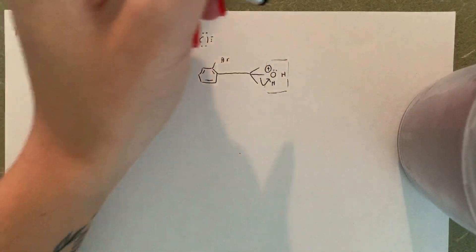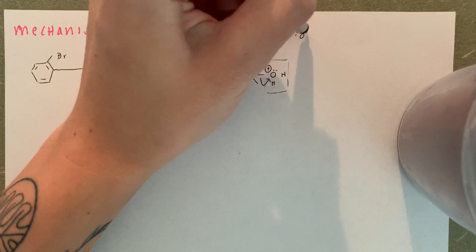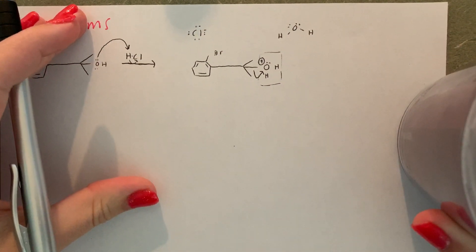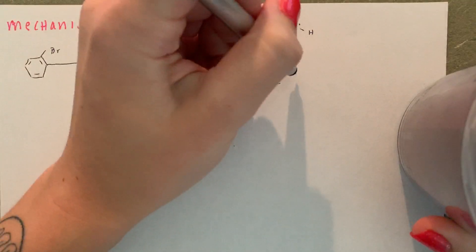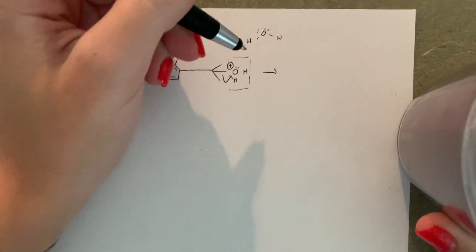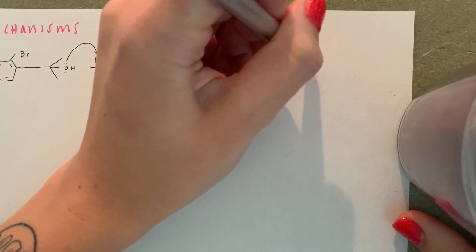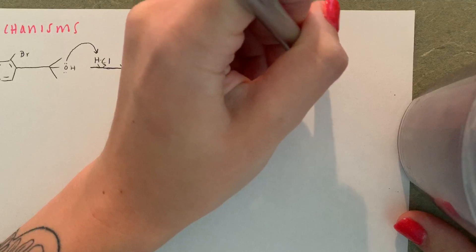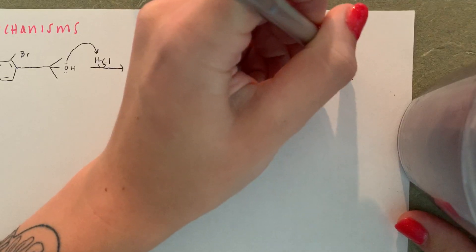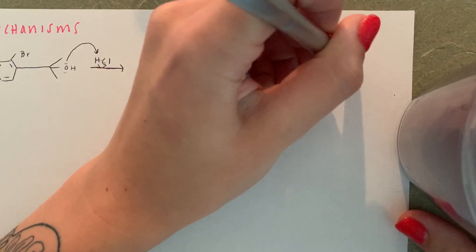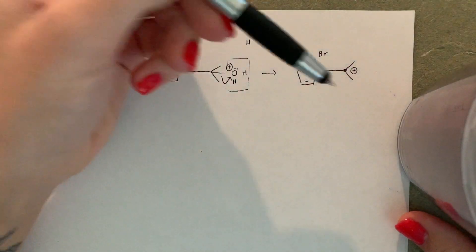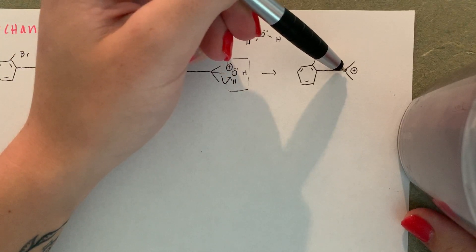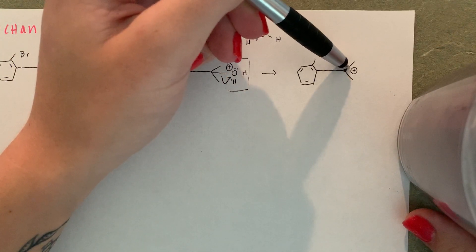Oxygens don't like positive charges ever, so we're going to let this H2O float off into space. You don't have to draw this as a product, but it's a good visual. Then the next step: we have the same hexane with the bromine gone, and this carbon is a carbocation.